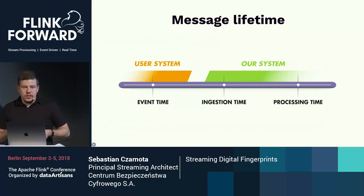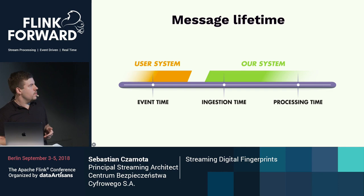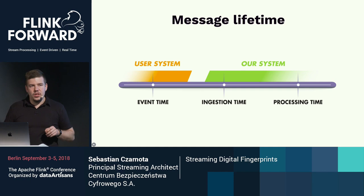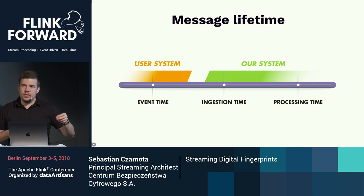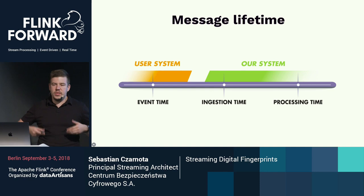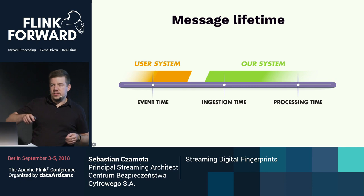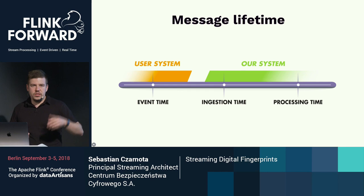To better understand the differences between time characteristics, let me present the message lifetime. When an event occurs in a user's system, we describe it in a data structure called a message. We assign to this message a timestamp called event time — the moment the event occurred in the user system using the user's system clock. This is important. Next, we send this message to our system, and our first boundary system attaches another timestamp called ingestion timestamp. Then the message is put into a queue, and when its time comes, it is processed — this time is called processing time.